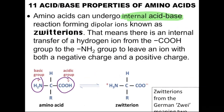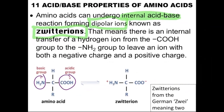When there is an internal acid-base reaction, you will have dipolar ions — basically two charges, positive and negative. This form is called the zwitterion. Usually a positive charge is called a cation and a negative charge an anion, but when you have both positive and negative charge in one molecule, we call it a zwitterion. There is an internal transfer of a hydrogen ion from the COOH group to the NH2 group, leaving an ion with both a negative charge and a positive charge.